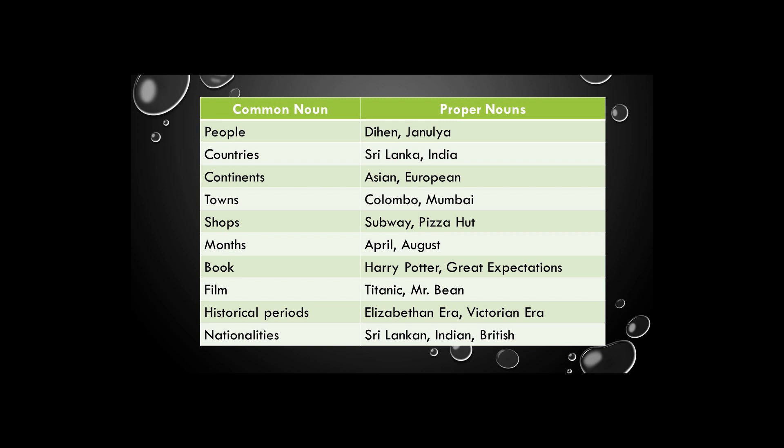Colombo and Mumbai are names of towns. Subway and Pizza Hut are names of shops. April and August are months. Harry Potter and Great Expectations are famous books. Titanic and Mr. Bean are world-famous movies. Elizabethan Era and Victorian Era are historical periods in literature. Sri Lankan, British, and Indian are some kinds of nationalities.